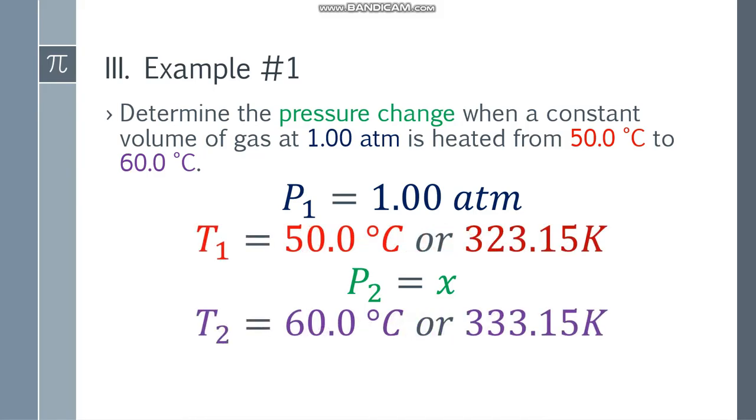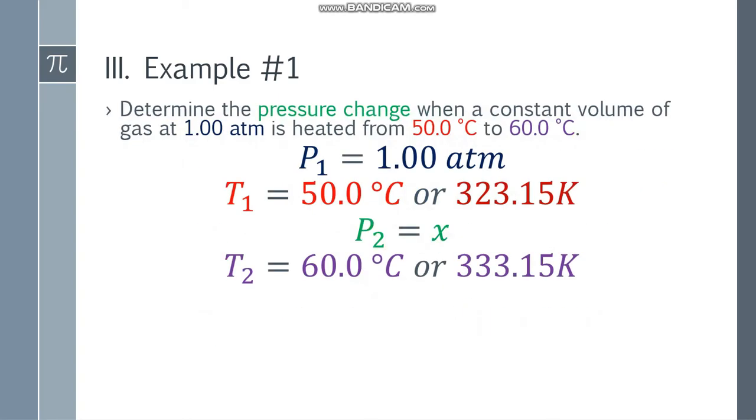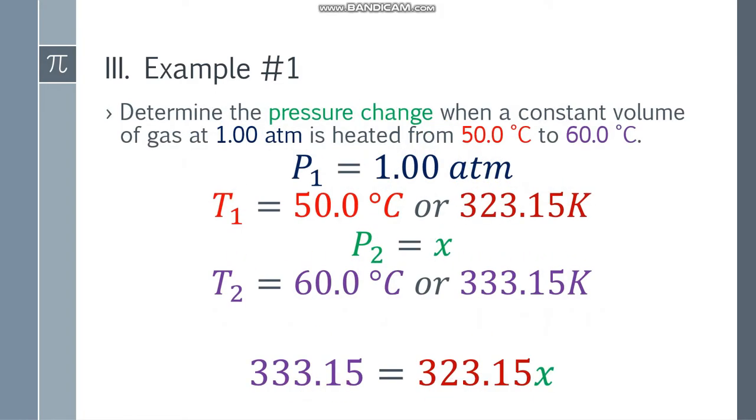Now we need to convert to Kelvin. So 50 degrees, add 273.15, becomes 323.15 Kelvin. And 60 becomes 333.15 Kelvin. Now that we've changed to Kelvin, let's use the formula: P1 over T1 equals P2 over T2. Substitute the values: 1 over 323.15 equals x over 333.15.